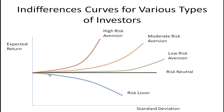In the case of moderate-risk aversion, you have to reward this person more for taking on another unit of risk — it's steeper than the low-risk aversion curve. The high-risk aversion person has a relatively steep indifference curve, meaning to get them to take another unit of risk you've got to give them a much higher expected return, and it increases at a rather rapid rate. They really don't like risk, so as risk increases you've got to reward them faster and faster.